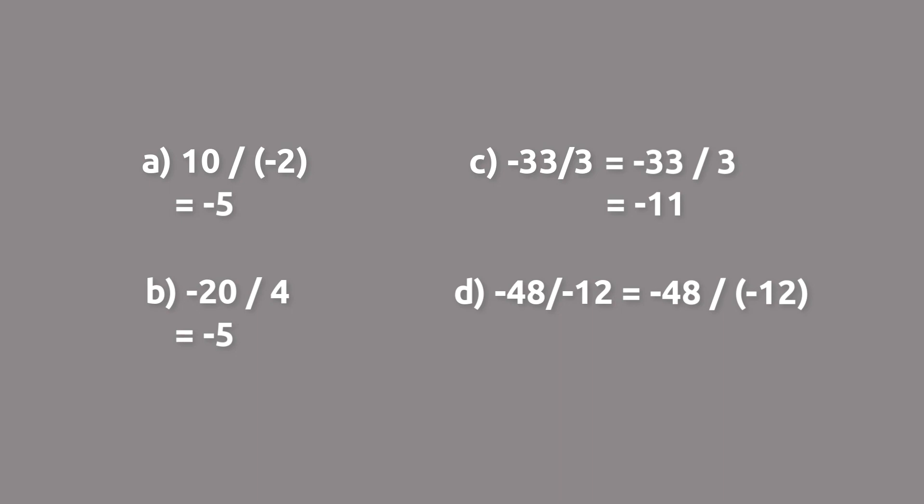So negative 48 divided by negative 12, that's the same thing as 48 divided by 12, which is going to be 4.